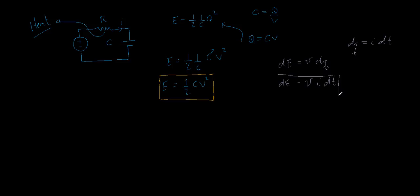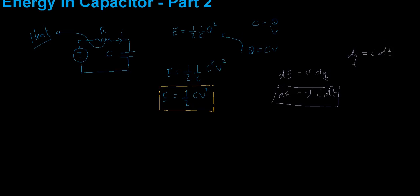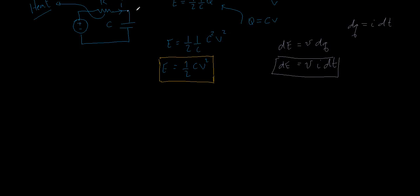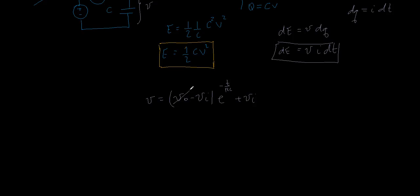We're going to use the solution to the differential equation obtained in a previous video — please watch that to catch up if you missed it. We found that the voltage across the capacitor is equal to V0 minus VI times e to the minus t divided by RC, plus VI, where V0 is the initial voltage and VI is the final voltage. Assuming V0 equals zero, this simplifies to VI minus VI·e to the minus t over RC.